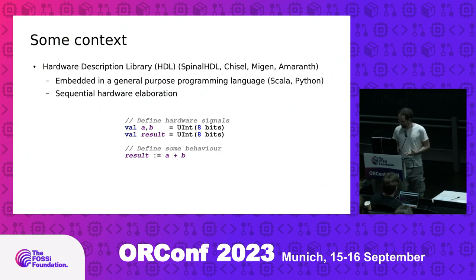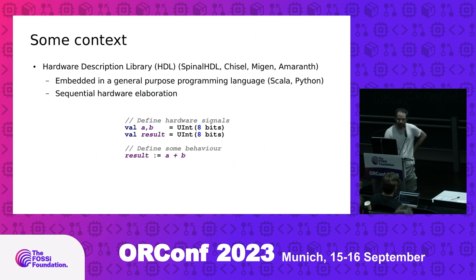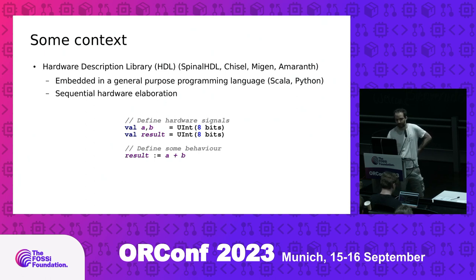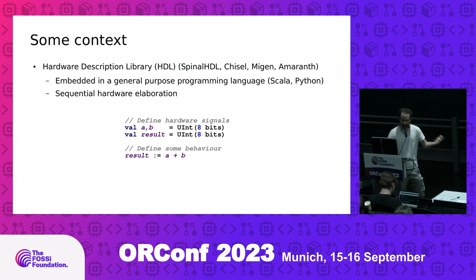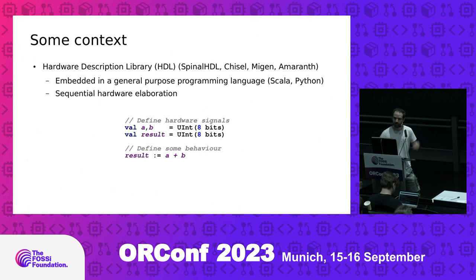To give an example of code, very simple — here is some Scala code. At Scala runtime, it will execute these first lines and say, okay, I have A and B, and there will be UInt 8-bit signals, I will add that to the netlist. Then it continues — okay, adding Result to the netlist, and then adding some combinatorial behavior to the netlist, really in a sequential manner. That's really the paradigm.